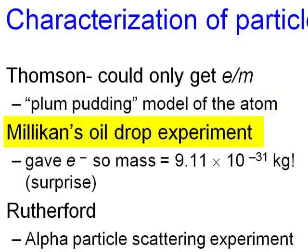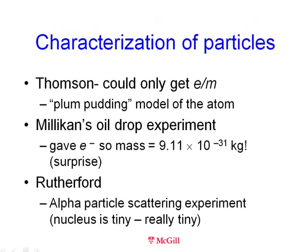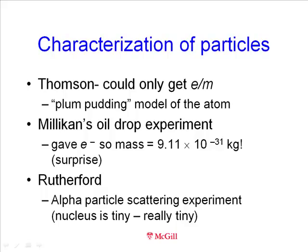In a later ingenious experiment, Millikan was able to find the electron charge, and from the charge-to-mass ratio, this meant the mass of the electron was extremely small. It was 9.11 times 10 to the minus 31 kilograms. By small, we mean that it is about 1,800 times smaller than the smallest atom, the hydrogen atom. Hence, Thompson had discovered a new particle.